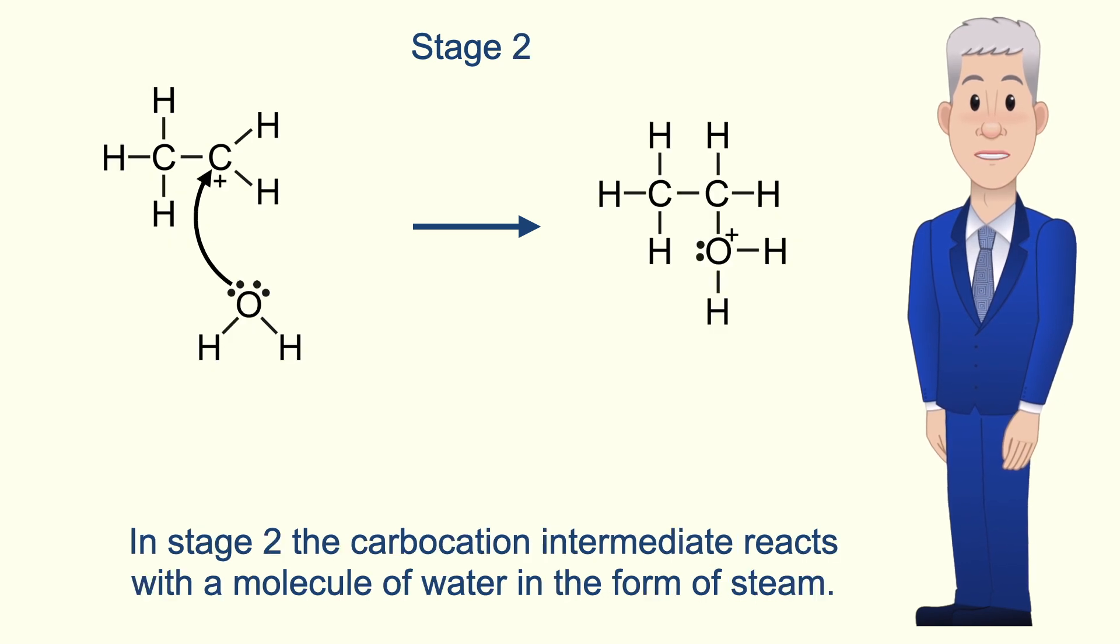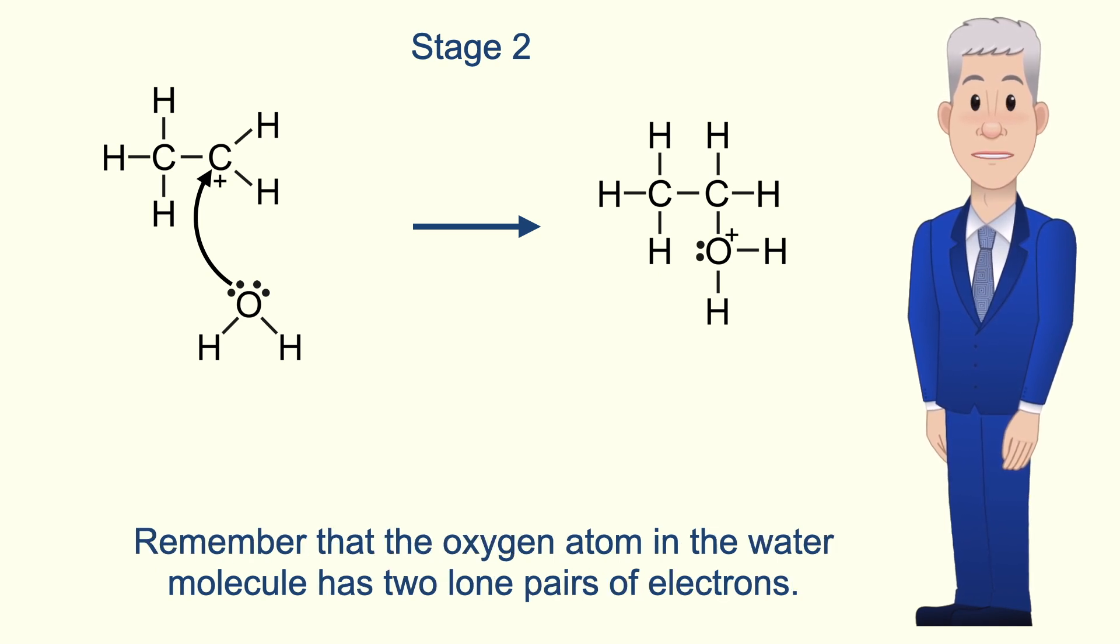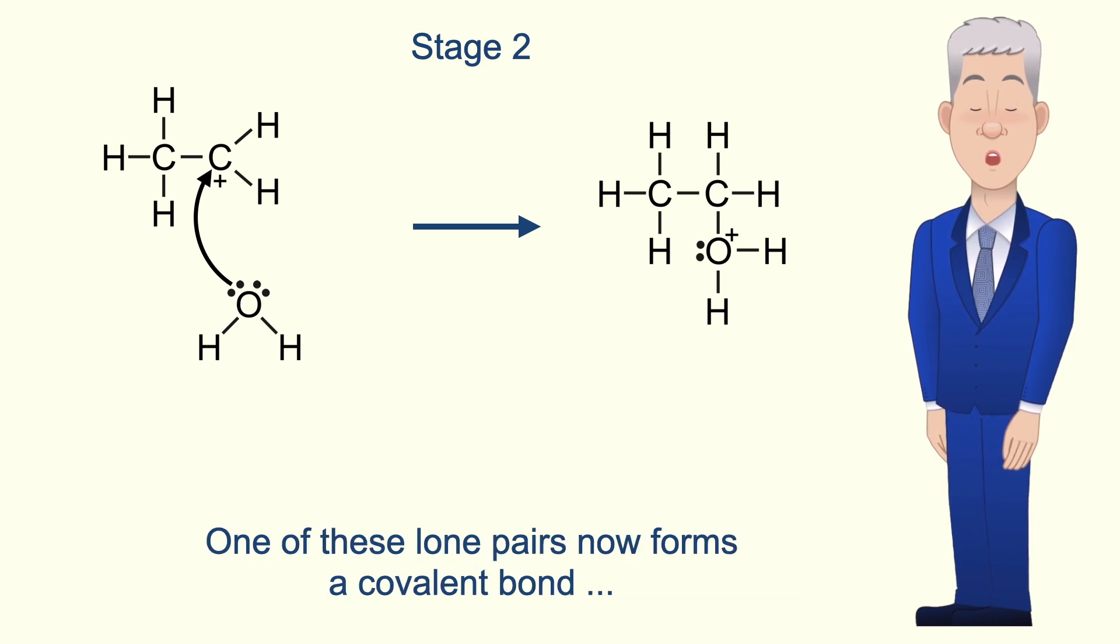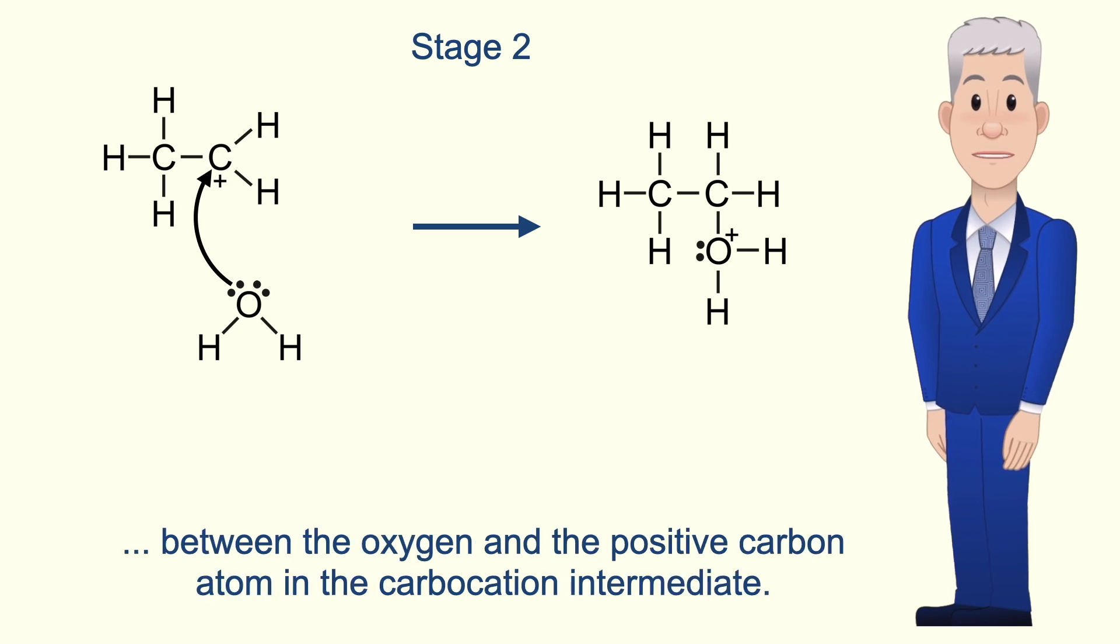Now in stage two the carbocation intermediate reacts with the molecule of water in the form of steam. The oxygen atom in the water molecule has two lone pairs of electrons. One of these lone pairs now forms a covalent bond between the oxygen and the positive carbon atom in the carbocation intermediate.